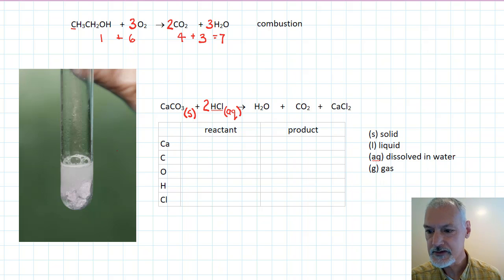The bubbles that you see present in this liquid are the result of carbon dioxide gas that's being produced. And at the same time, you produce water, which is a liquid, and another material, calcium chloride, which is soluble in the water that's produced.